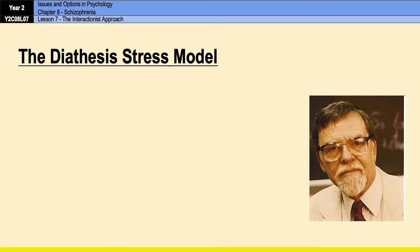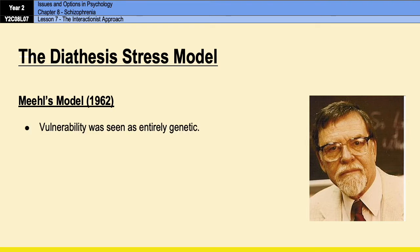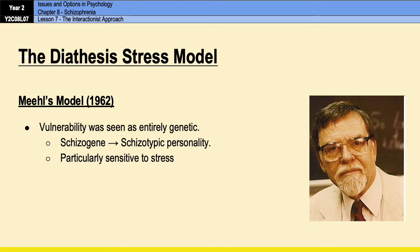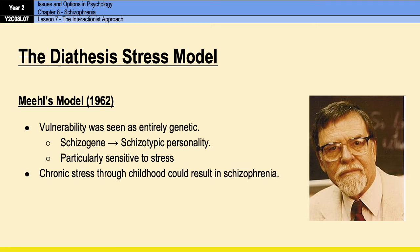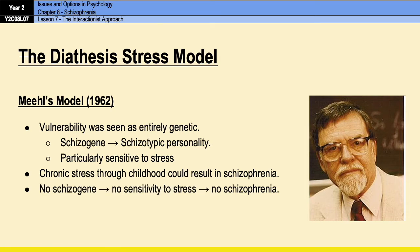The diathesis-stress model was first applied to schizophrenia by Meehl in 1962. In this model, Meehl suggested that the diathesis — the vulnerability — was entirely genetic and the result of what he called a single schizogene, which resulted in a schizotypic personality. One particular trait of this schizotypic personality was a very high sensitivity to stress. According to this model, no amount of stress would trigger the onset of schizophrenia in someone who doesn't have the schizogene. However, in carriers of the gene, chronic stress through childhood — in particular the presence of the schizophrenogenic mother or the use of double binds — could result in the development of schizophrenia.